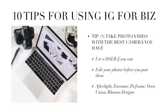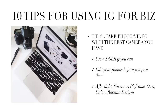Tip number one: take photos and videos with the best camera you have access to. Use a DSLR camera if you can — that's what I use most of the time for my Instagram pictures and videos. Even the template images for Instagram Stories were created with a DSLR because quality does matter. I also recommend editing your photos before you post them. Even if you're shooting on a smartphone, there are lots of great editing apps. Some that I use and love are Afterlight, Facetune, PicFrame, Over Union, and Rona Design — all iPhone apps.